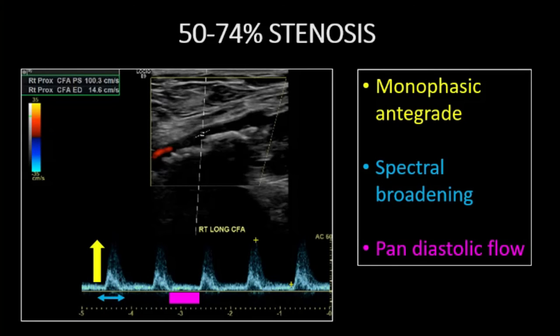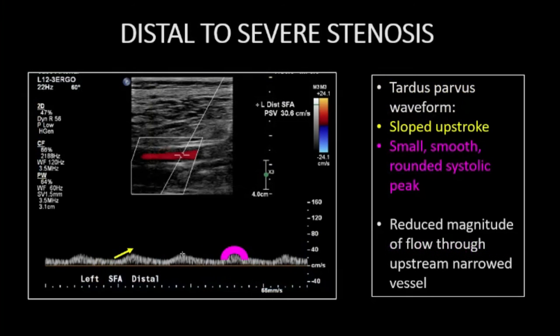This excellent case demonstrated both grayscale confirmation of extensive plaque with approximately 50% stenosis and a classic waveform showing monophasic antegrade flow, spectral broadening, and pandiastolic flow. This patient's extent of disease involved the external iliac through popliteal arteries with a nearly identical waveform in each segment.